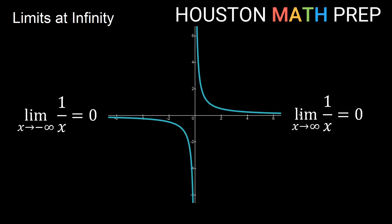In general, if I have some number like 1 over something that gets infinitely large — think x getting larger and larger: 1 over a million, 1 over a billion — that number is going to become smaller and smaller. So the limit of some constant divided by something getting larger and larger is going to be a value of 0.